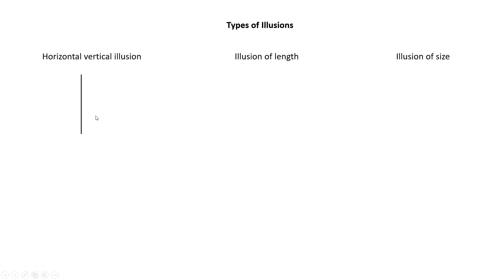The three types of illusions are: horizontal-vertical illusion, illusion of length, and illusion of size. In the horizontal-vertical illusion, two lines of the same length are shown — one horizontal and one vertical. The vertical one looks smaller and the horizontal one looks bigger, even though both are the same length. So our perception is wrong — we perceive the horizontal one as longer and the vertical one as shorter.